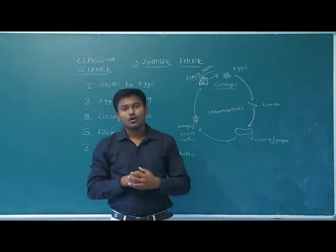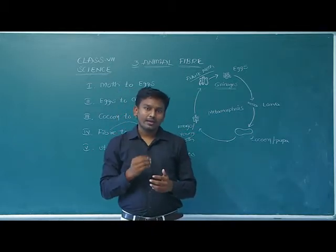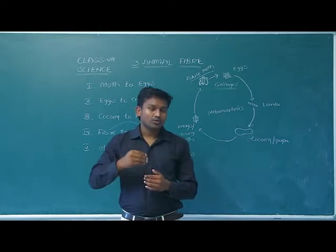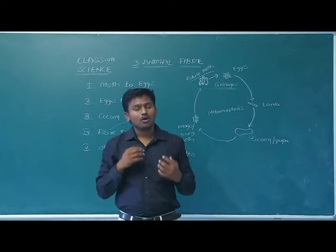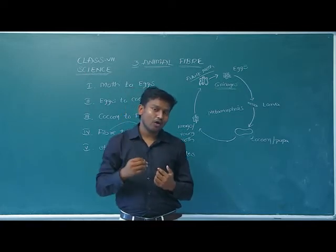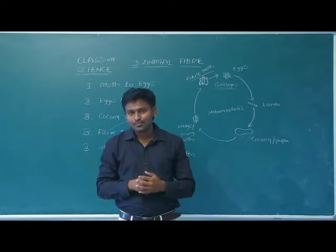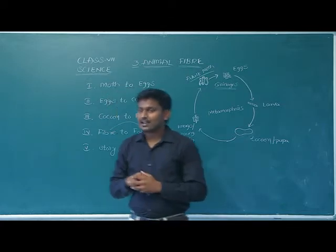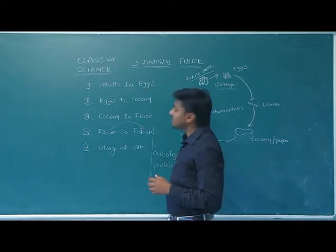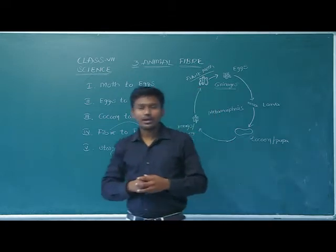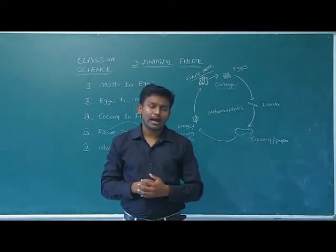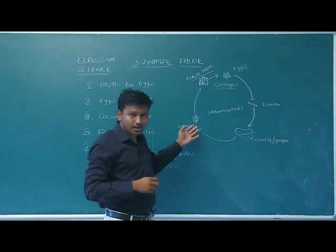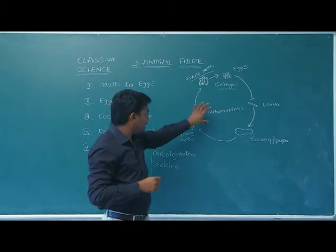In this class we are going to learn about two animal fibers — silk and wool — how they can be obtained from animals and what processes are involved. Let us first see the silk fiber, how it can be obtained from the silkworm. We can also see the life cycle of the silkworm.